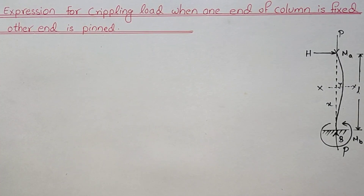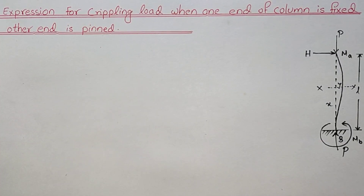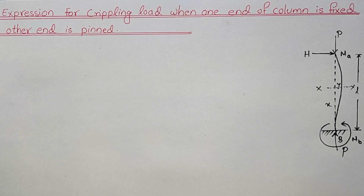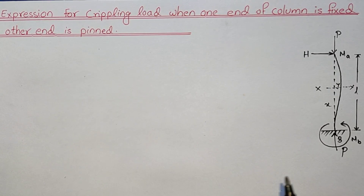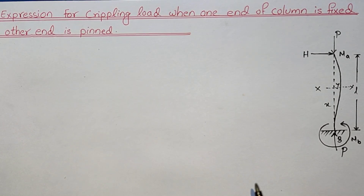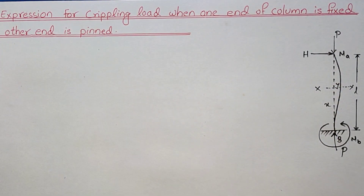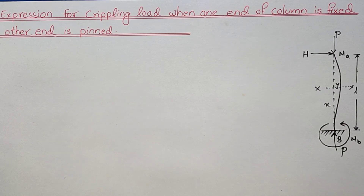Hey guys, welcome back to Civil Learning Online. Today in this video I am going to derive an expression for the crippling load when one end of the column is fixed and the other end is pinned. There are basically four end conditions for the failure of a long column, and you will find the description link for those videos in the description. Without any further delay, let's get started.